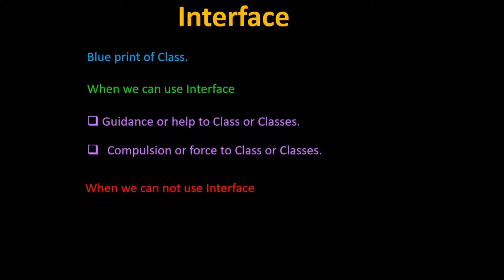When cannot we use an interface? If we don't have an exact idea — or have only a partial idea — about the methods, then interface cannot be used. If we realize afterwards that there should be some extra methods in a class, and we add those methods to the interface, then all classes which implemented the interface would need to implement the new methods too — which would be time-consuming and complicated. In such a situation, go for abstract class instead of interface.